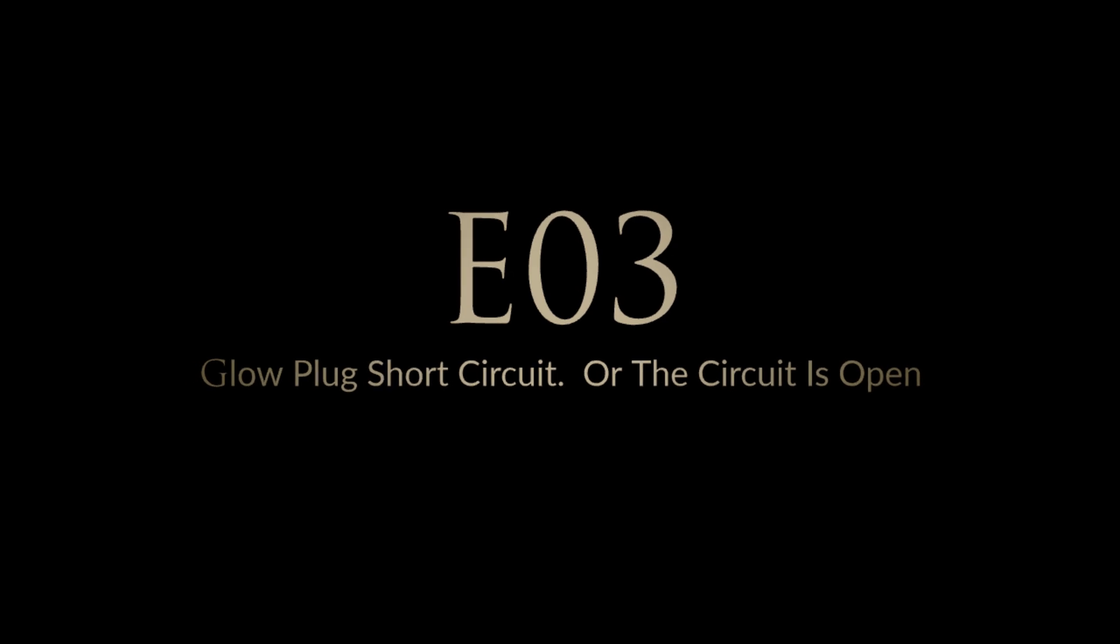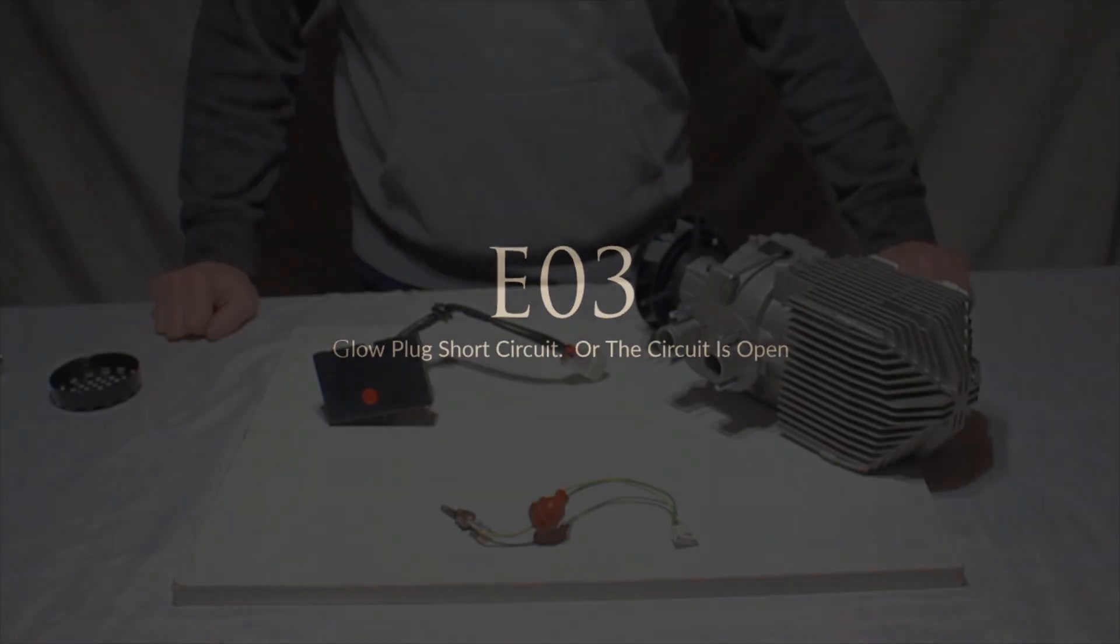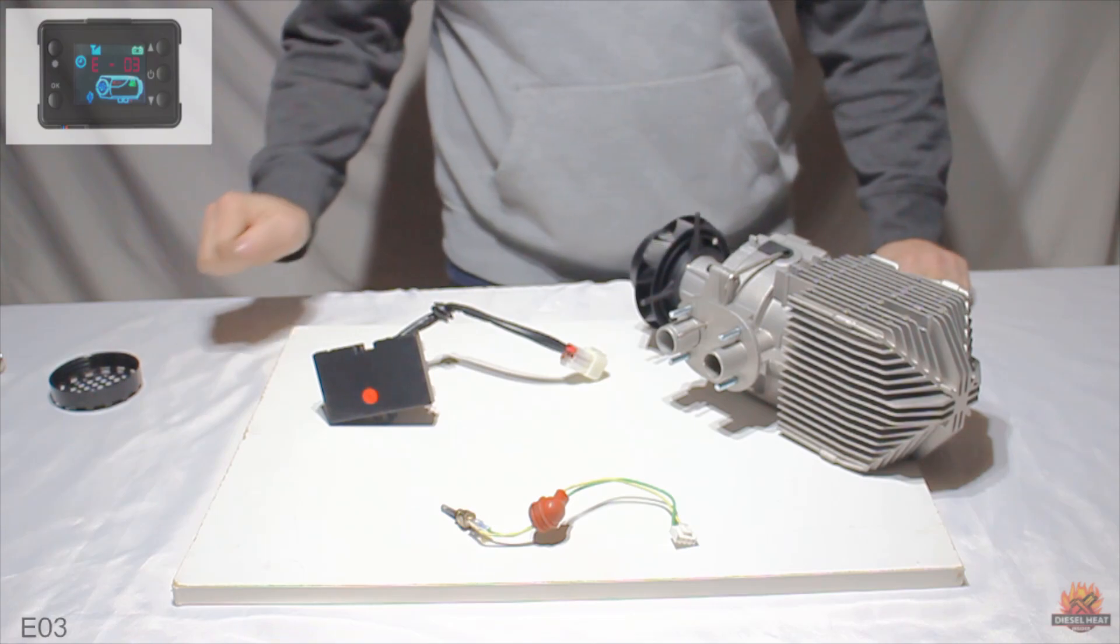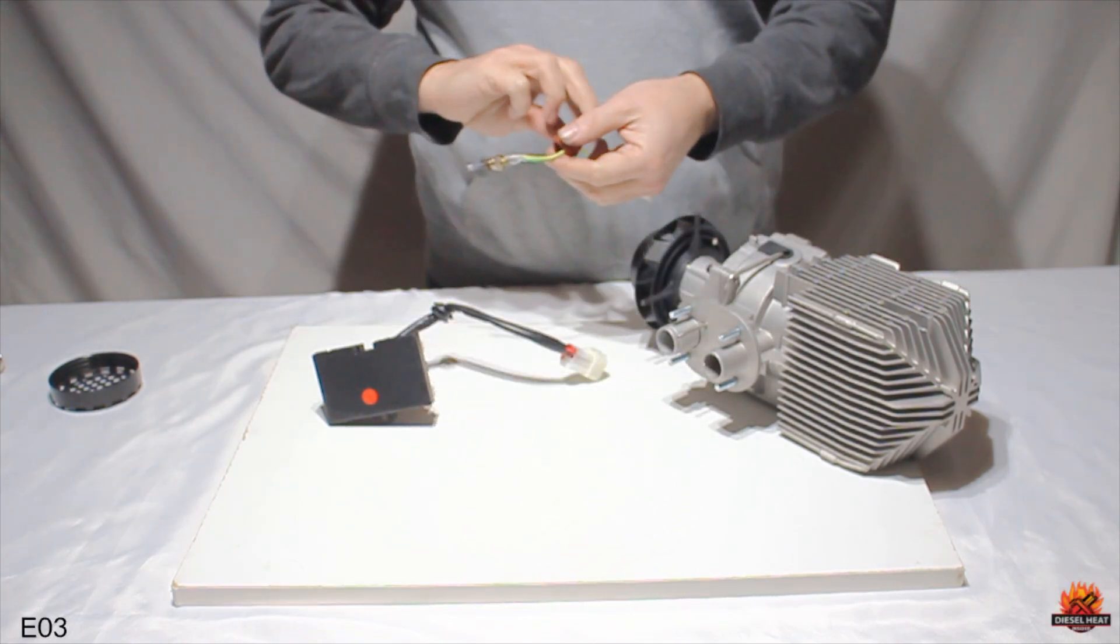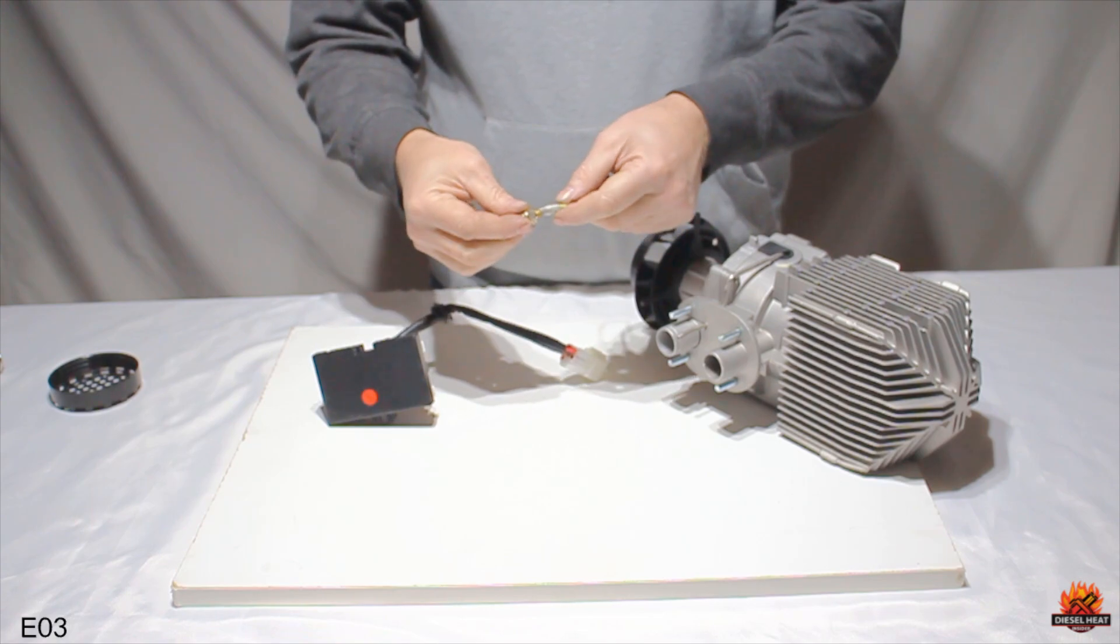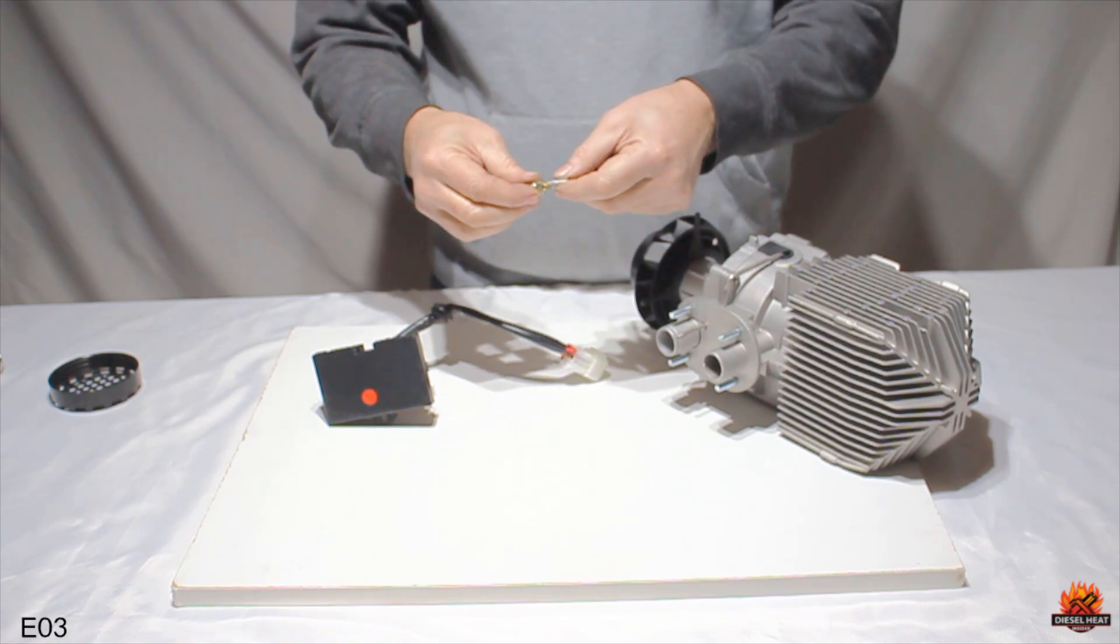Error code 3, glow plug short circuit or the circuit is open. To resolve error 3, we must focus on examining these five key points. First, check to see if the glow plug wires have become disconnected from the glow plug terminal.